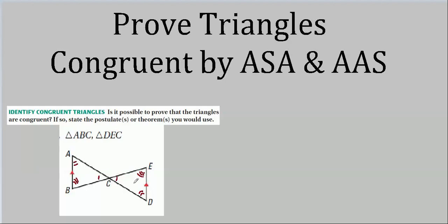But are any of the sides congruent? I don't see how we would know if they were — nothing has been added to this drawing to indicate it. It doesn't say, for instance, that C is a midpoint — then we'd have something. There's nothing to tell us that any of these sides are congruent to any other side. All we have is the three angles, and as I pointed out, there is no angle angle angle theorem. There's a side side side postulate, but there's no AAA.